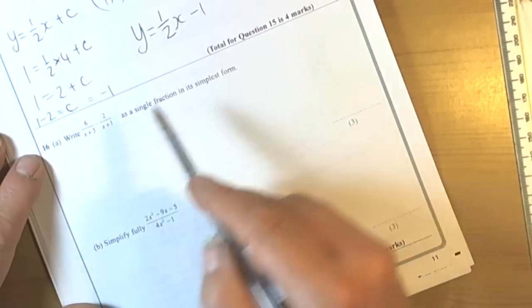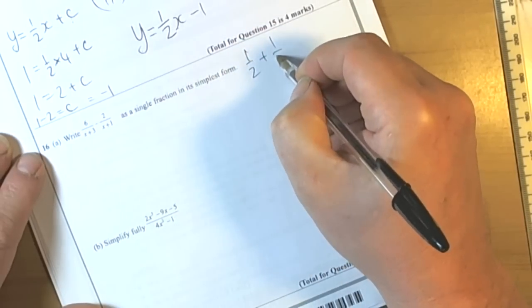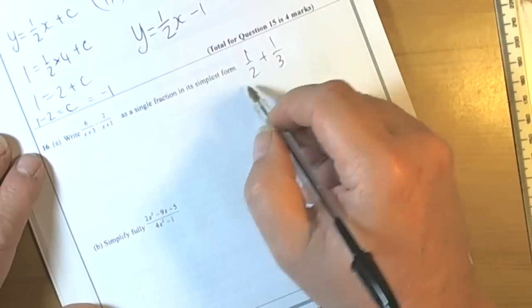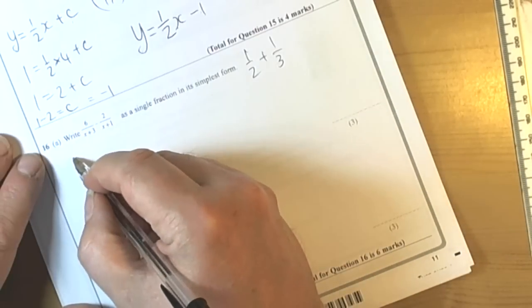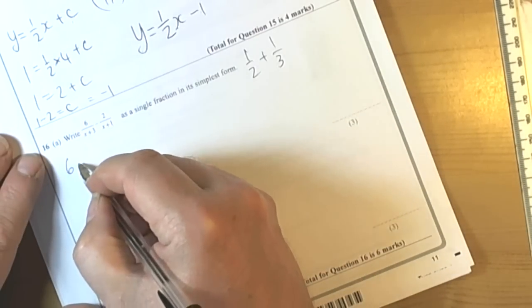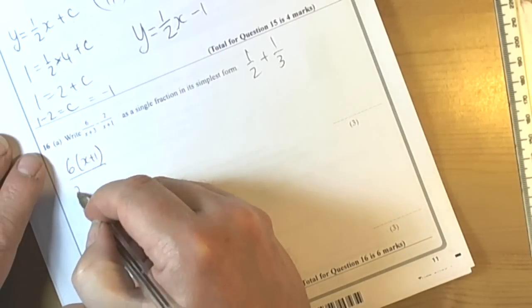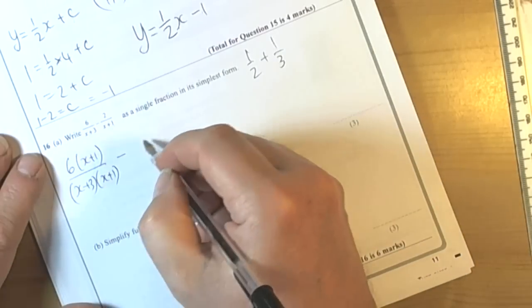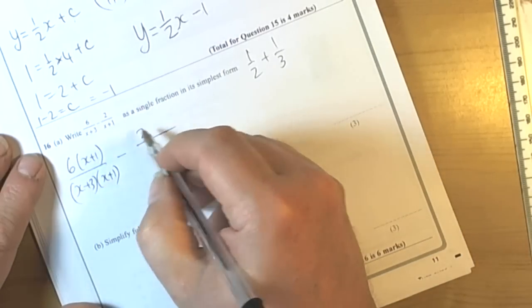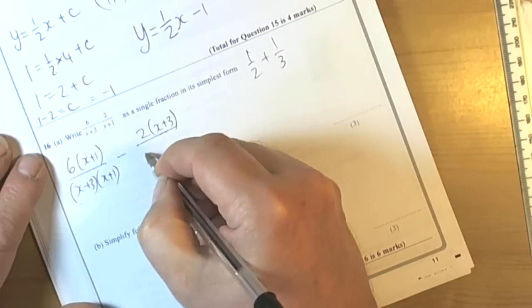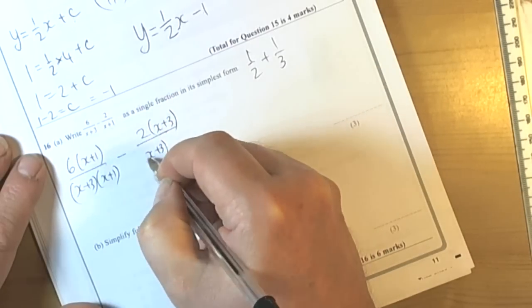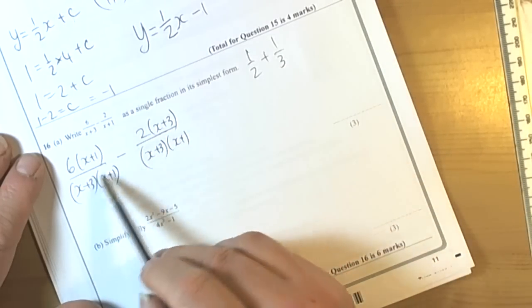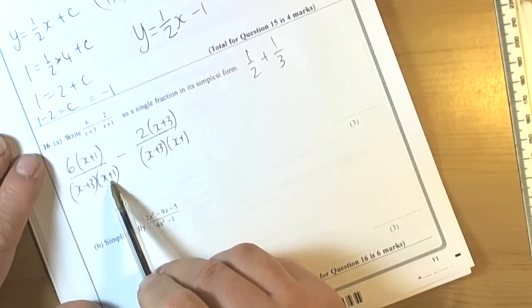The quickest way of doing this is similar to if we had a half plus a third, then the quickest way to get the common denominator is to do 2 times 3, which would be 6. We do the same with the algebra. So if we multiply the top of this fraction by x plus 1 and the bottom by x plus 1, that's going to give us a common denominator, because when we multiply the second fraction by x plus 3 top and bottom, we've made both fractions have a common denominator of x plus 3 times x plus 1.